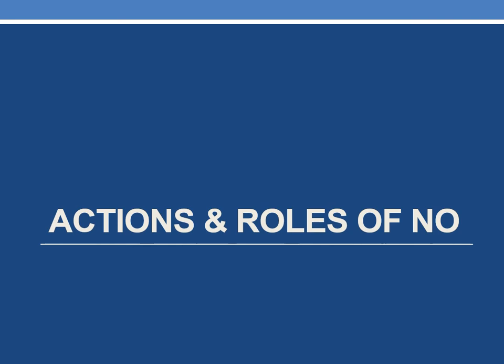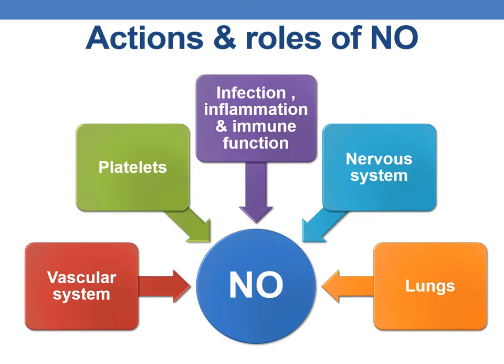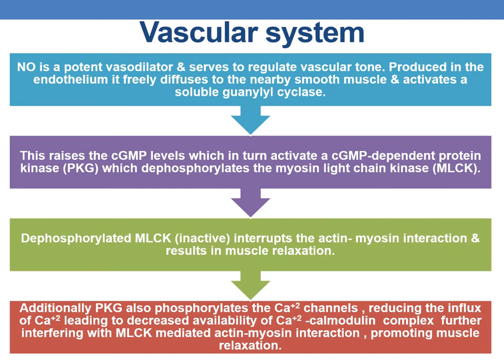Nitric oxide plays major roles in the vascular system, platelets, infection, inflammation, nervous system, and lungs. NO is a potent vasodilator produced in the endothelium. It diffuses to nearby smooth muscle and activates soluble guanylyl cyclase (GC), raising cGMP levels, which activate cGMP-dependent protein kinase G (PKG). PKG dephosphorylates myosin light chain kinase (MLCK); this inactive MLCK interrupts actin-myosin interaction, resulting in muscle relaxation.